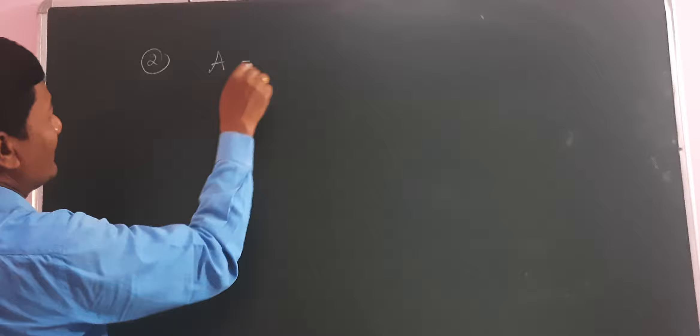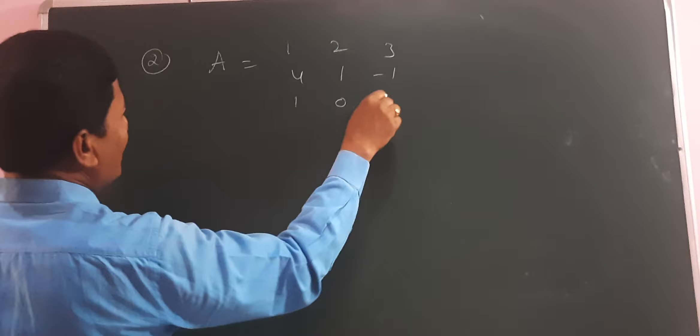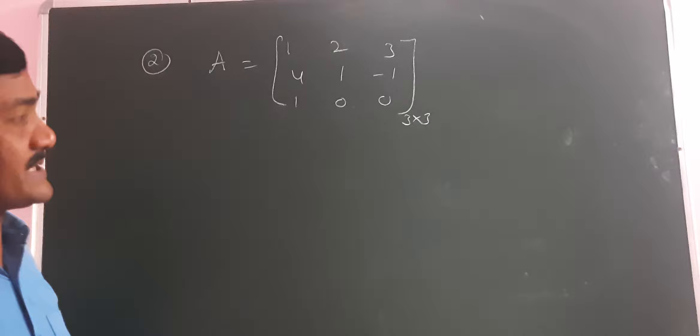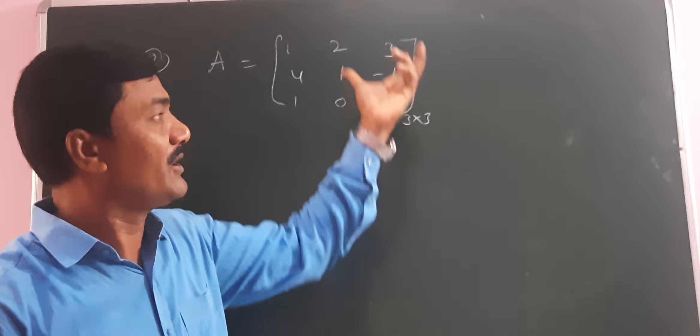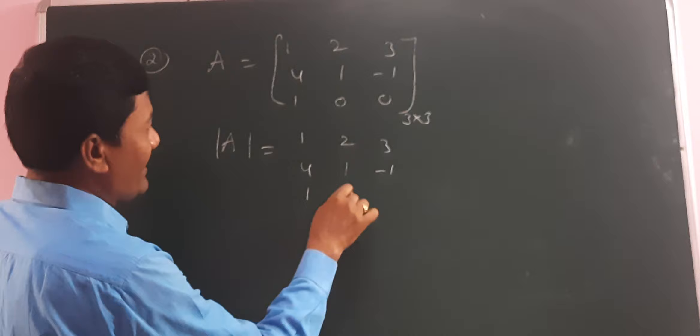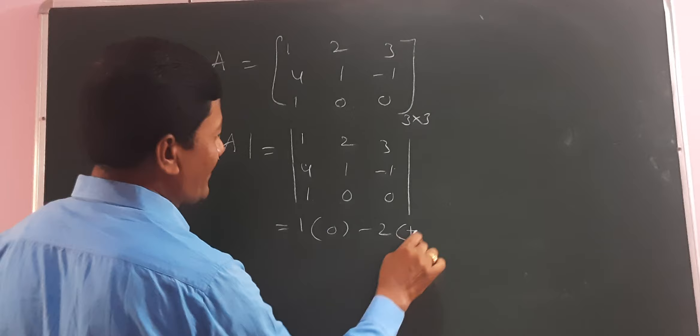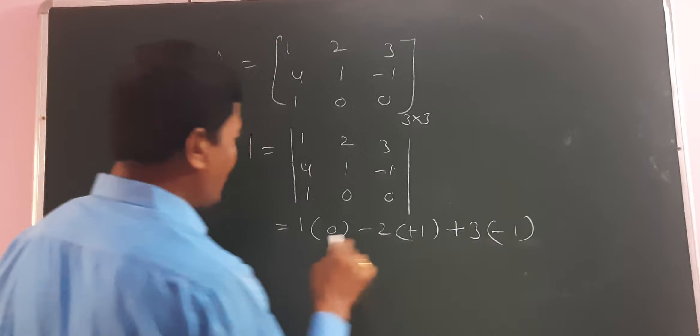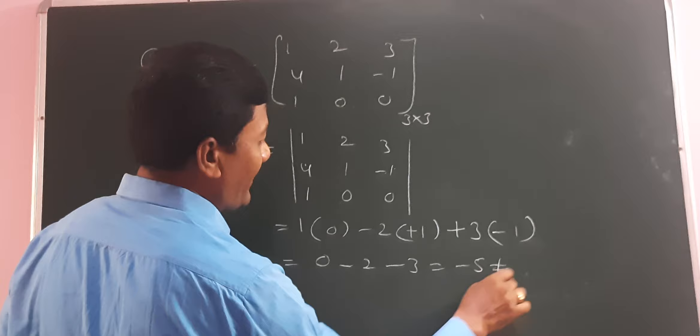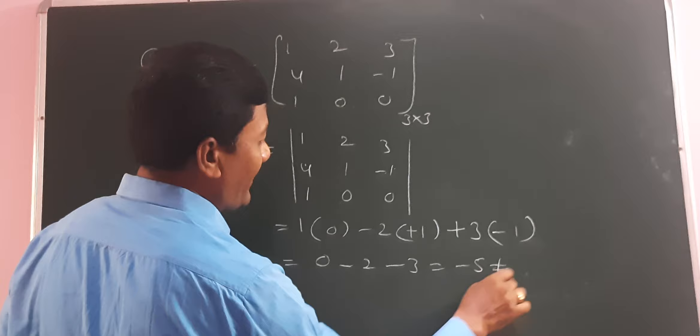Example two: capital A equals [1, 2, 3; 4, 1, −1; 1, 0, 0]. This is a 3×3 matrix. Whenever a square matrix has a determinant directly not equal to zero, its rank is its order. Let us check: determinant of A equals 1·(0−0) − 2·(0−(−1)) + 3·(0−1), which gives 0 − 2·(1) + 3·(−1) = 0 − 2 − 3 = −5, which is not equal to zero. Therefore, rank of A equals 3, directly its order. Whenever there is a square matrix whose determinant is directly not equal to zero, the rank equals its order.